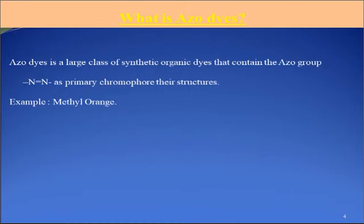Synthesis of Orange 2. What is an azo dye? An azo dye is a large class of synthetic organic dyes that contains the azo group — N double bond N — as a primary chromophore. An example structure is methyl orange.